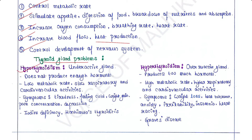Hypothyroidism: when the thyroid gland is underactive and does not produce enough hormones for the body's needs. It results in low metabolic rate and slow respiratory and cardiovascular activities. Symptoms include tiredness, feeling cold, weight gain, poor concentration, and depression. Iodine deficiency and Hashimoto's thyroiditis are the most common reasons.